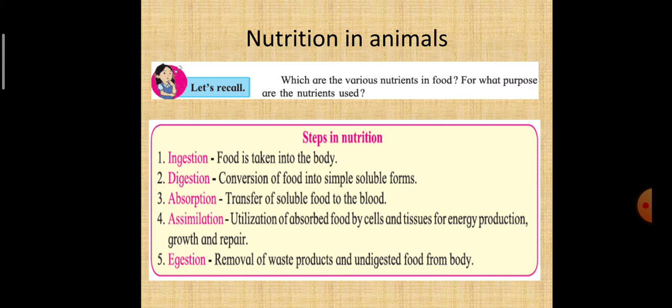Assimilation, utilization of the absorbed food by cells and tissues for energy production, growth and repair. And finally, egestion is removal of waste products and undigested food from the body. So these are the steps of nutrition in animals.